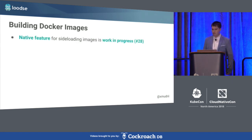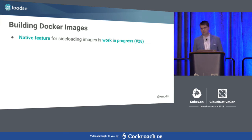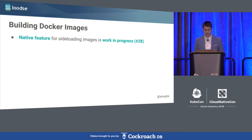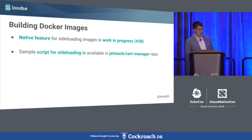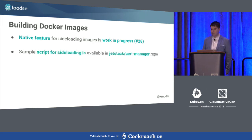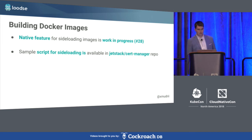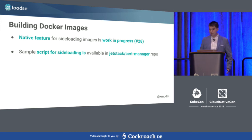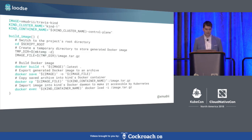Another option is to sideload the image to Docker running in KIND's container. This feature is a work in progress — you can follow the progress at issue 28 on the KIND repository. In the meantime, there is a sample script for sideloading available in the JetStack cert-manager repo that you can use for your project to build images that are available in KIND.